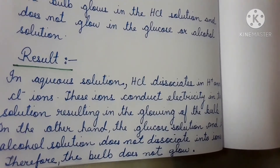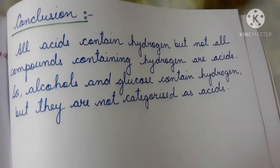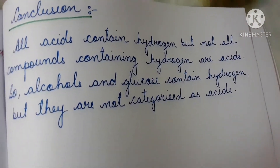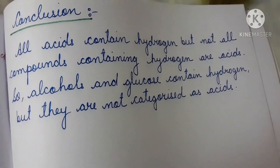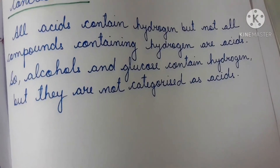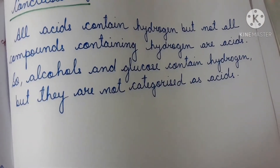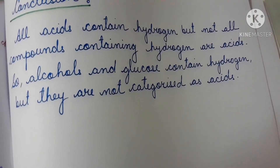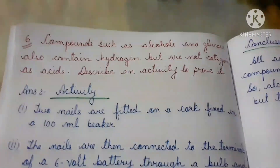Observation: The bulb glows in the HCl solution but does not glow in the glucose or alcohol solution. Result: In aqueous solution, HCl dissociates into H⁺ and Cl⁻ ions, which conduct electricity, causing the bulb to glow. Glucose and alcohol solutions do not dissociate into ions, therefore the bulb does not glow.